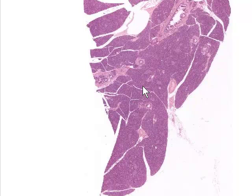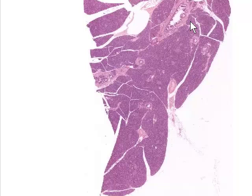The second thing, which should be fairly evident, are these large structures surrounded by pink staining connective tissue. These are either vascular structures supplying blood to and draining blood from the pancreas, or, as we see definitely here and here and here, these are large pancreatic ducts which drain pancreatic secretions into the duodenum.